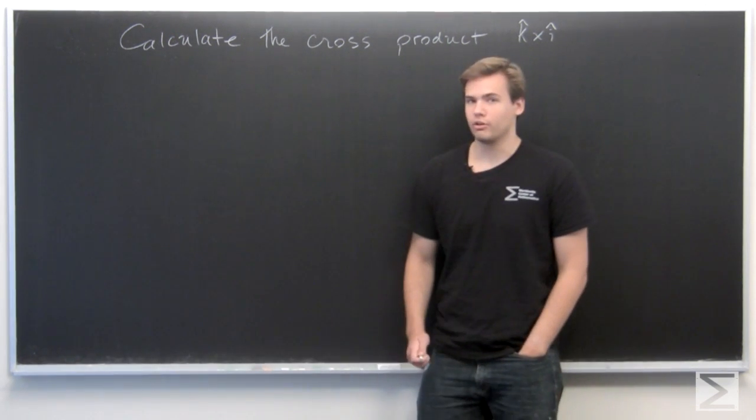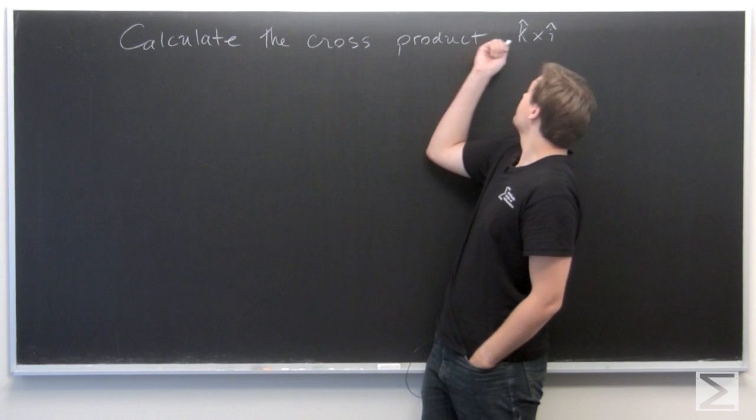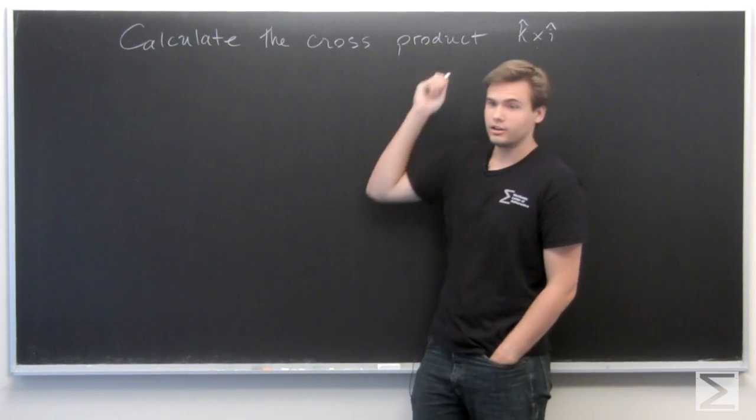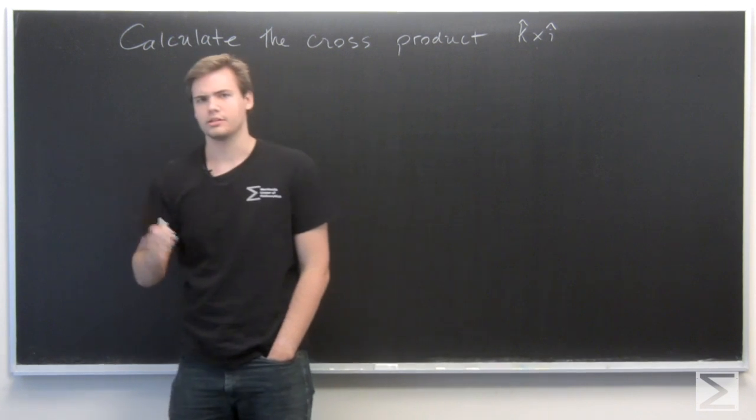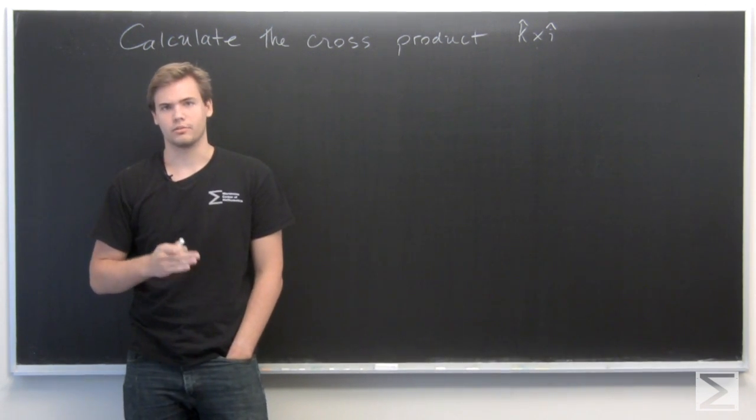In this problem, we want to calculate the cross product of the two vectors k and i, where k is the unit vector in the direction of the positive z-axis, and i is the unit vector in the direction of the positive x-axis.